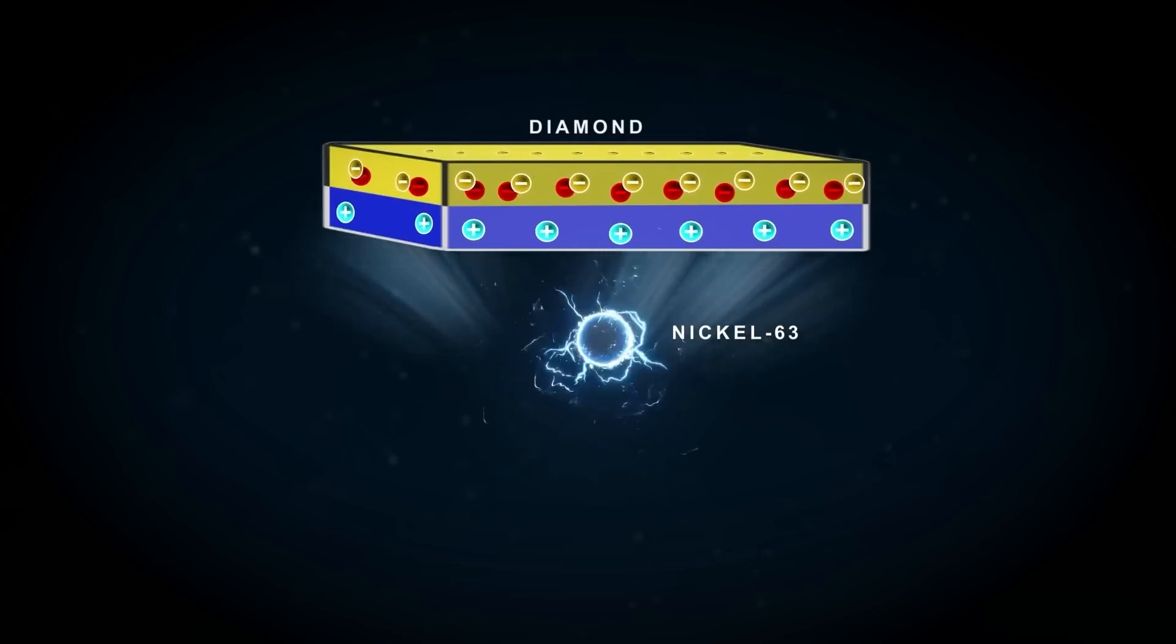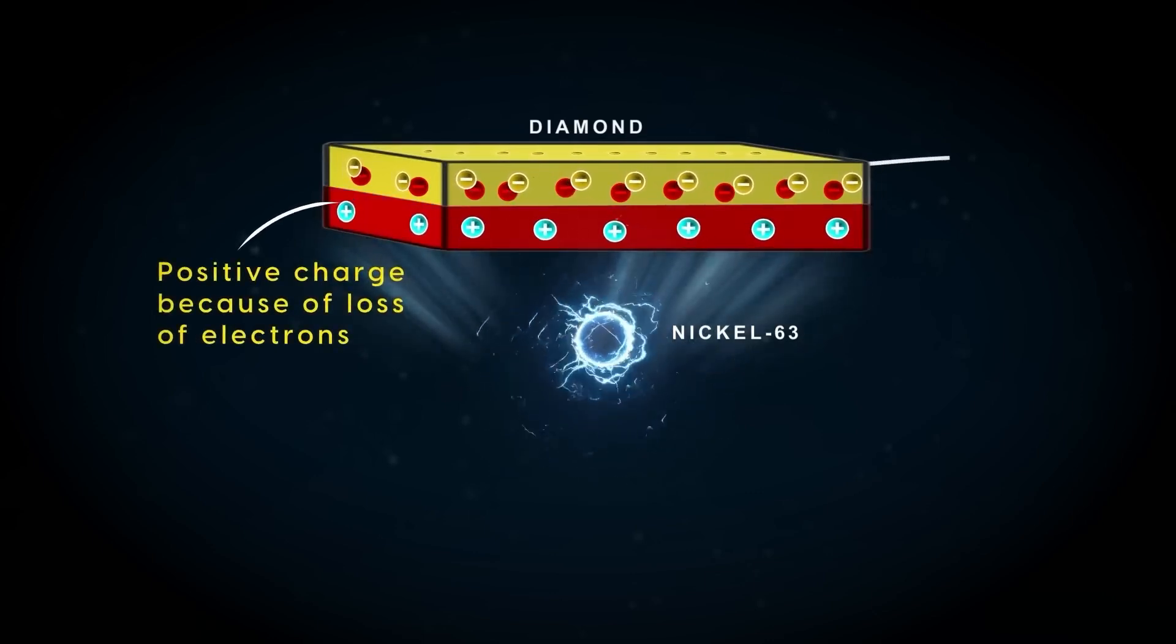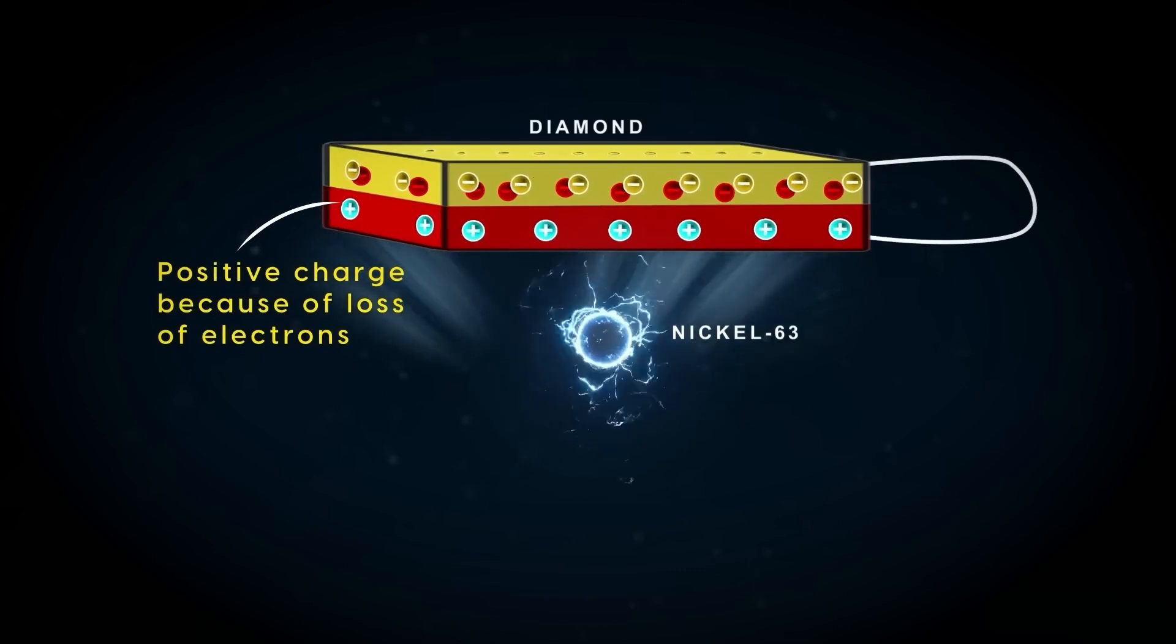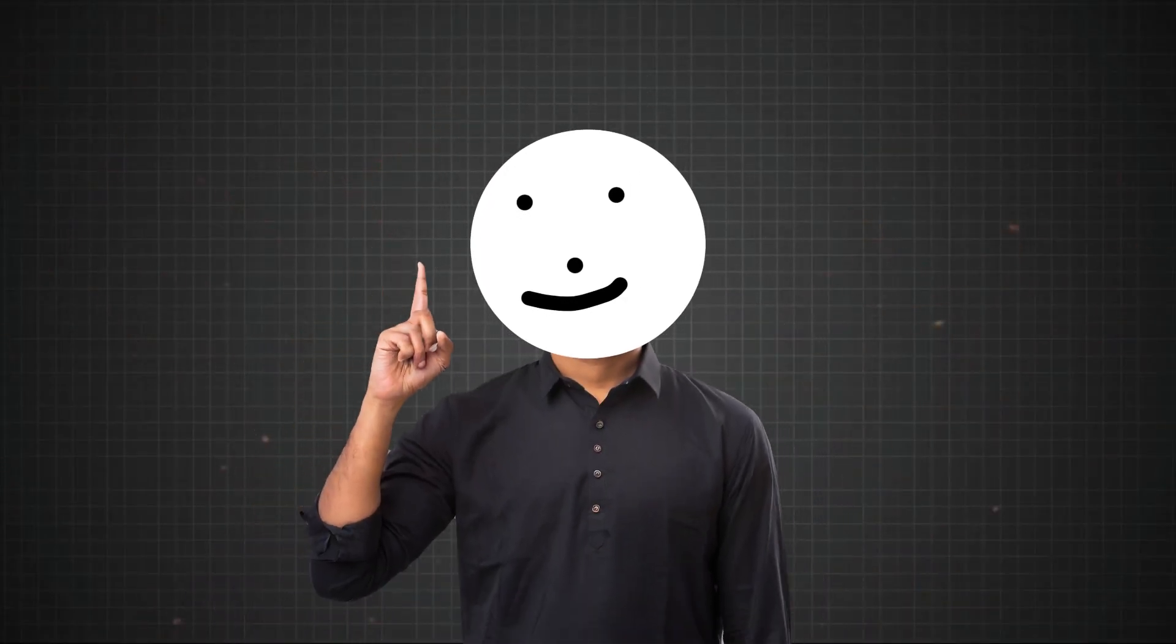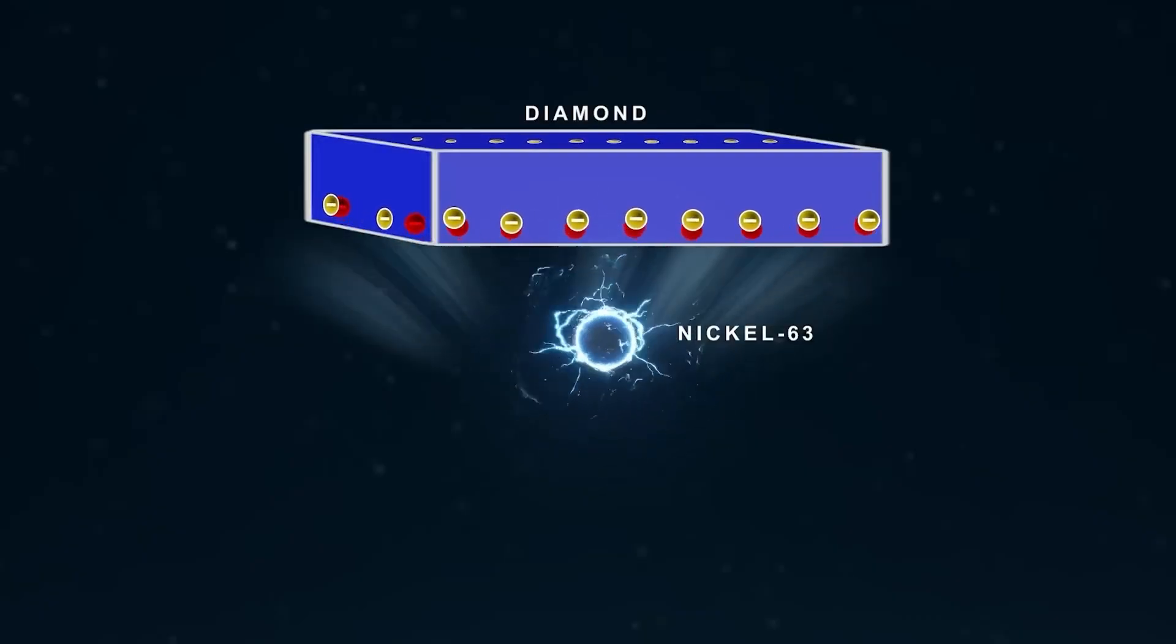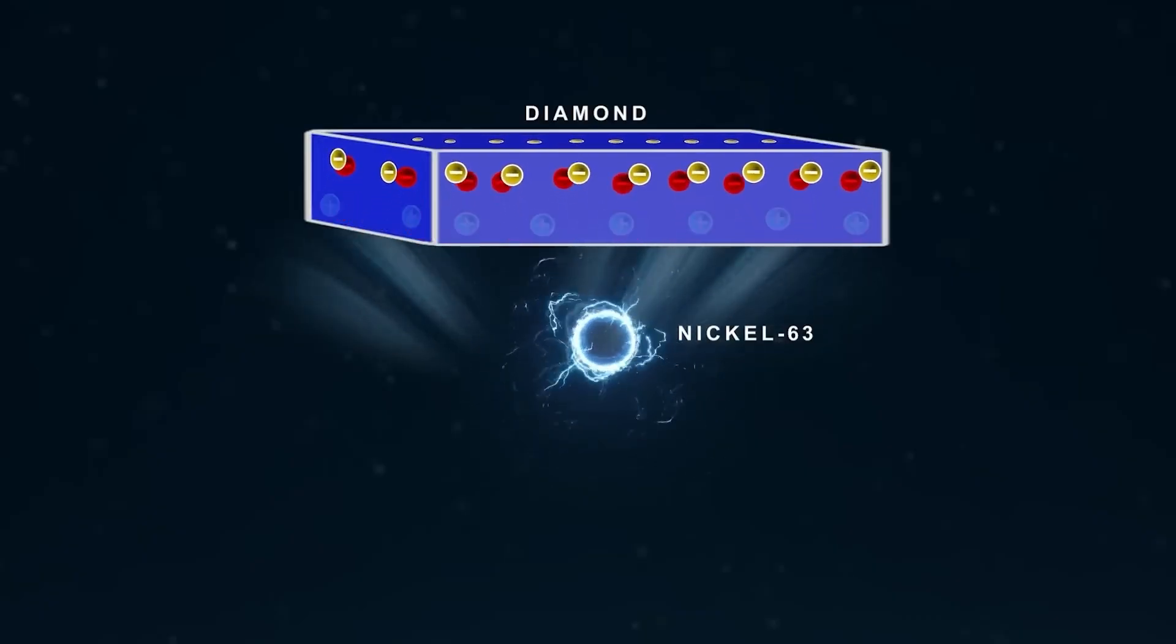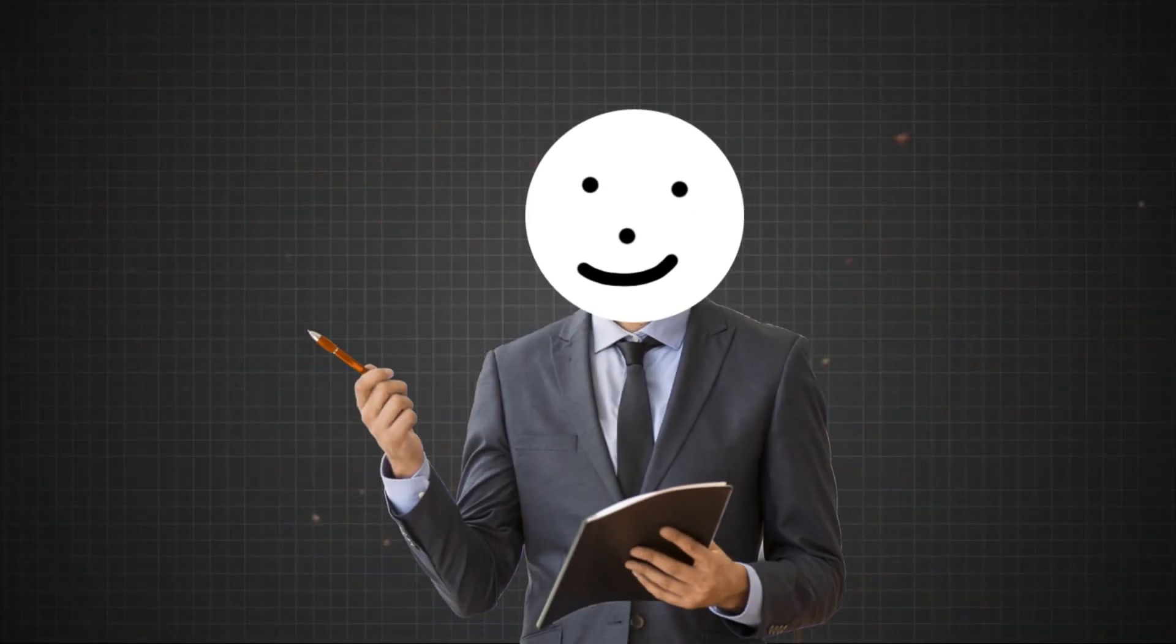In this way, electrons accumulate on one side of the diamond structure and are deficient on the other side. So, if you connect these two regions of low and high density with a wire, current will start flowing. Technically, this is exactly similar to solar cells. The only real difference is that instead of using sunlight photons to knock out electrons, a radioactive isotope's beta particles are used here.